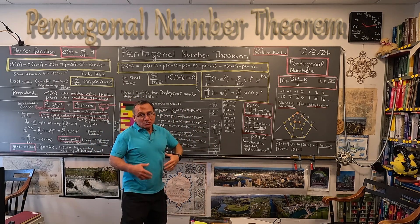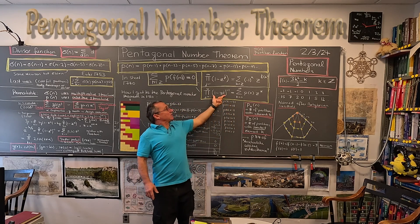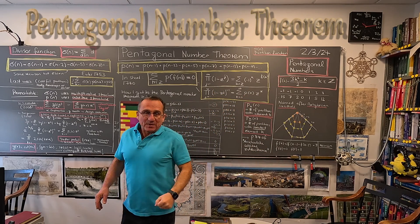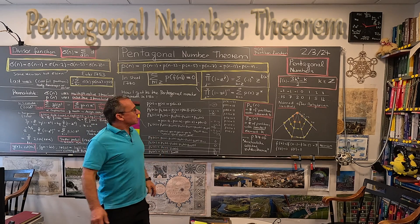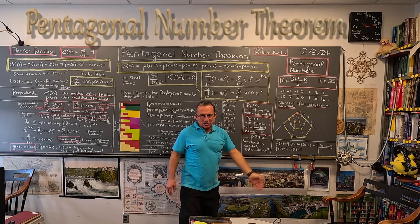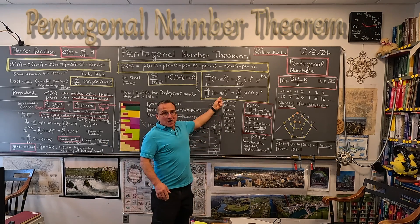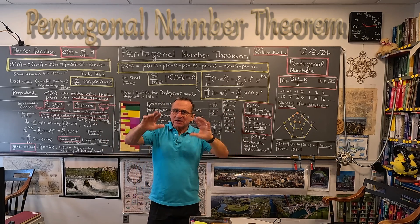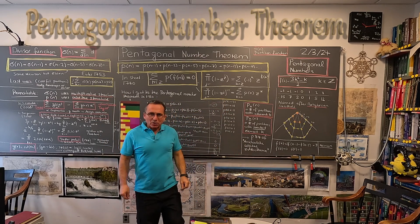And related to that is: when you take the reciprocal — divide 1 by that product — this gives you the generating function of the partition numbers. Something which is very nice and has relations with modular forms. There are many different places where this product appears.